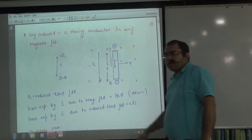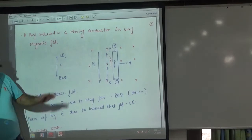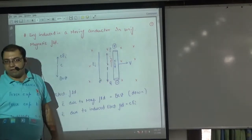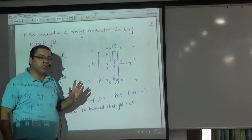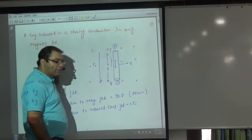In this case, if you have a conducting rod moving with velocity V, this method is written as method number one.